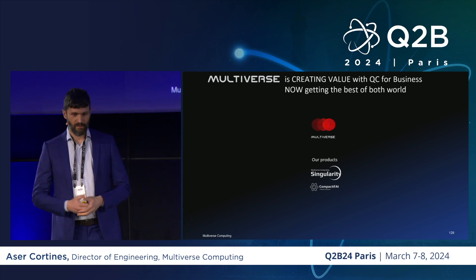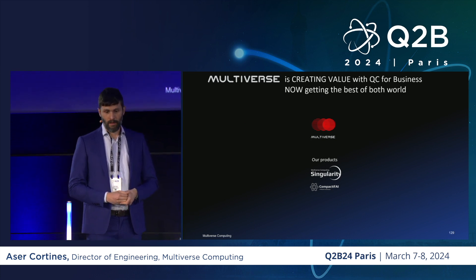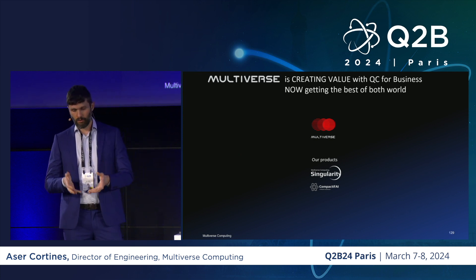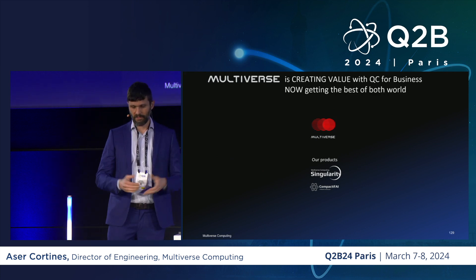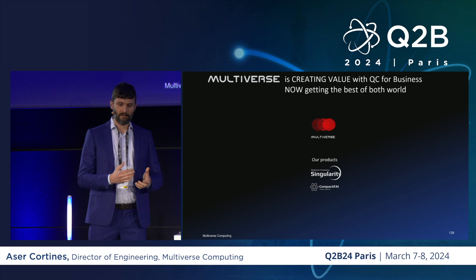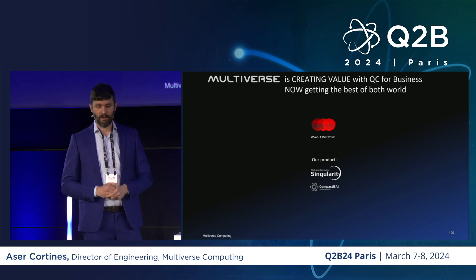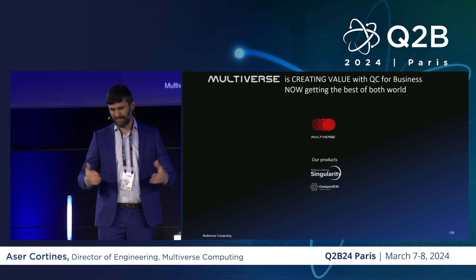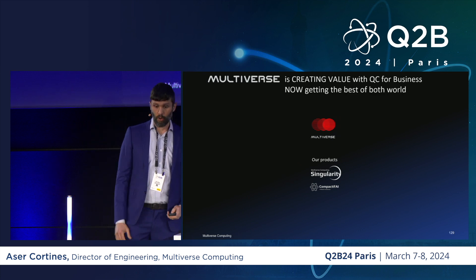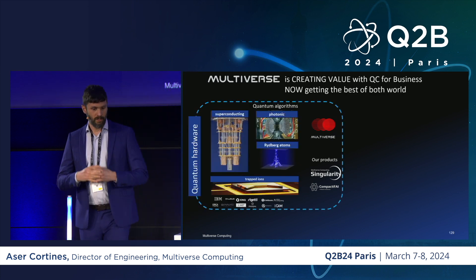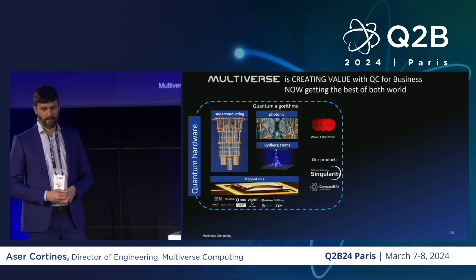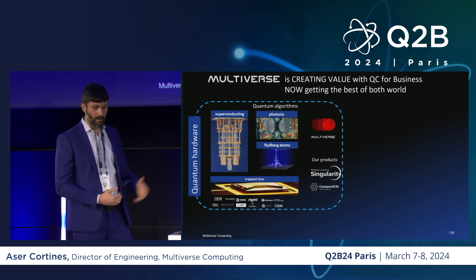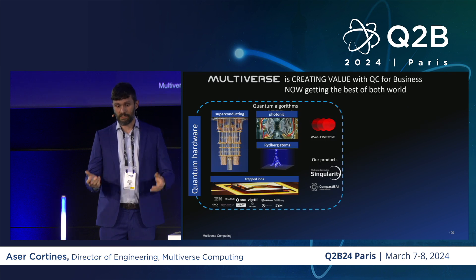We are Multiverse, and we are creating value today in quantum computing. We have two main products. The first is Singularity, mostly focused on optimization but also machine learning — there is a lot of optimization in machine learning. The second, which I recently created, is Compactify AI, which is designed to reduce the complexity and size of large language models or machine learning models in general.